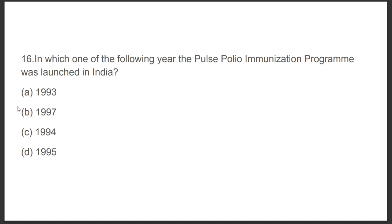Question number sixteen: In which year was the Pulse Polio Immunization Program launched in India? Option A: 1993, Option B: 1997, Option C: 1994, Option D: 1995. The answer is Option D, 1995.